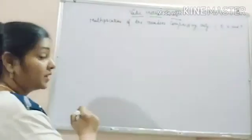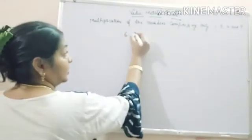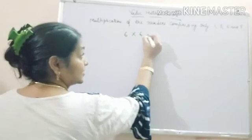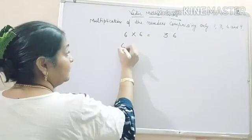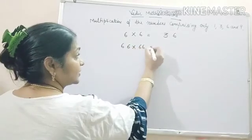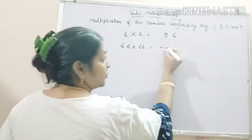It's turn of number 6. 6 into 6 is 36. Now if there are double 6, the answer should be what is it?